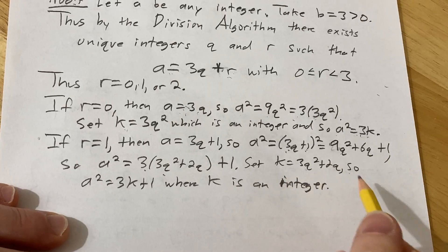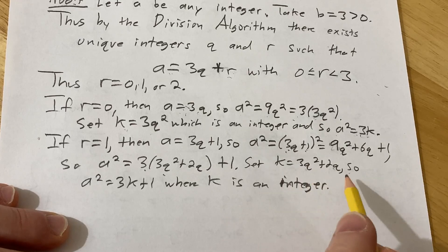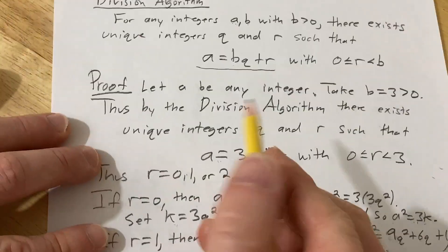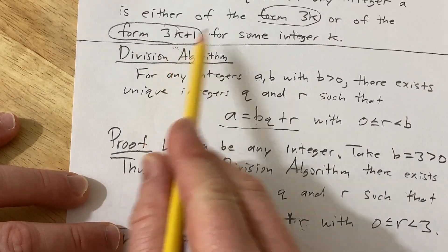Where k is an integer. Because it's the product and sum of integers. 3q squared is an integer, 2q is an integer because they're both products of integers. Then you have a sum of integers which is an integer. So we've fit this form here, which was one of our choices.